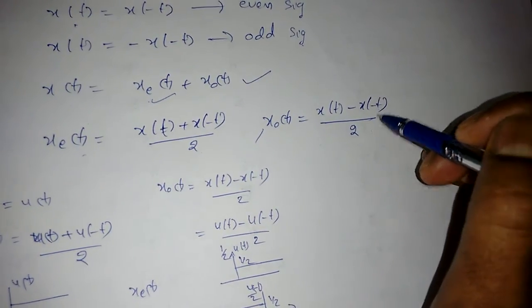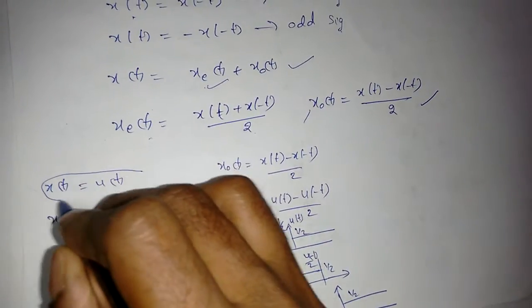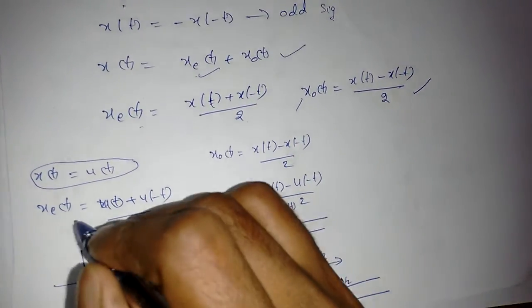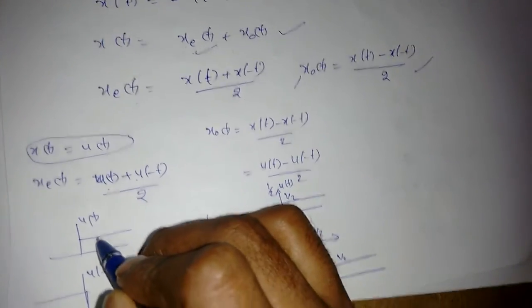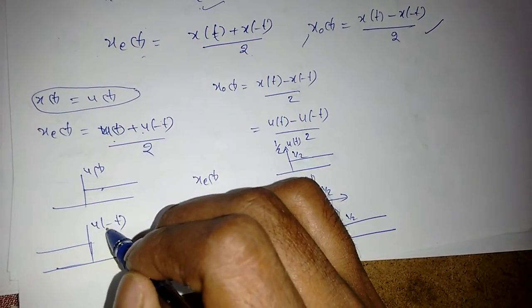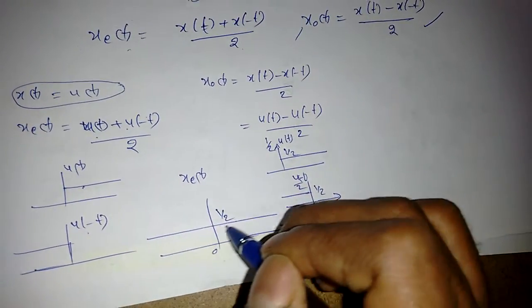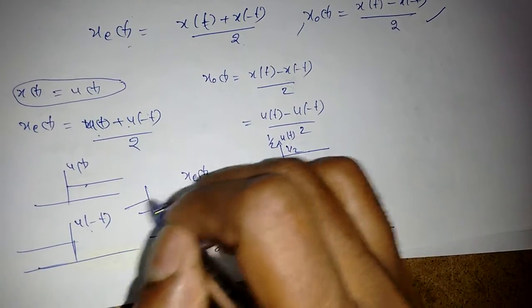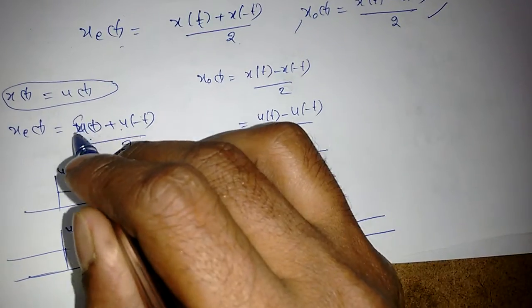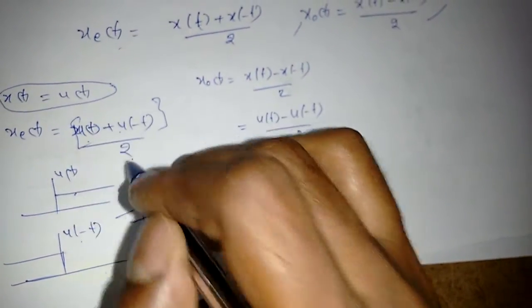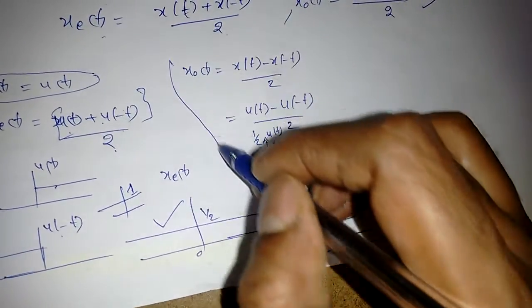The odd part is [x(t) - x(-t)] / 2. For example, if x(t) is u(t), the even part is [u(t) + u(-t)] / 2. Since u(-t) is the time-reversed step, adding u(t) and u(-t) gives a signal equal to 1 from minus infinity to infinity, scaled by 1/2.